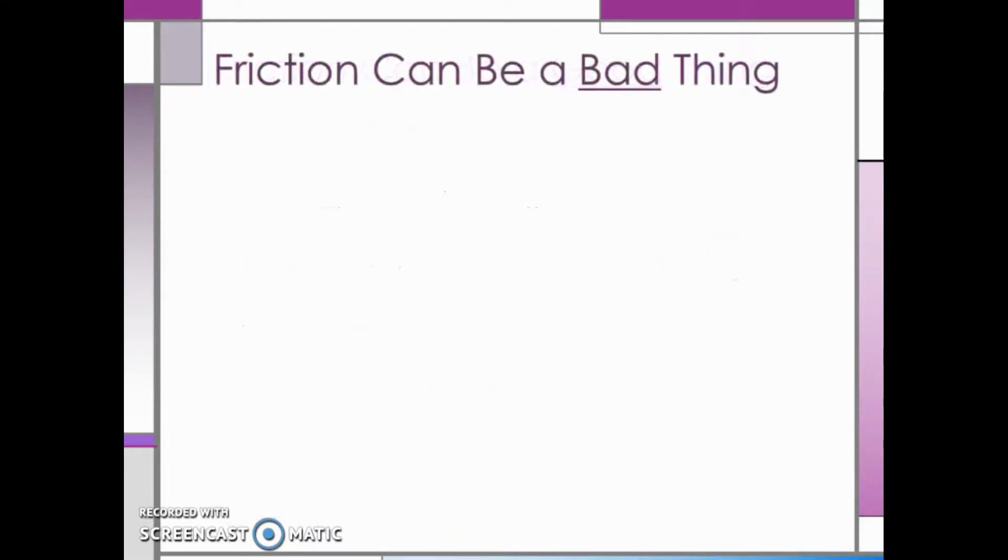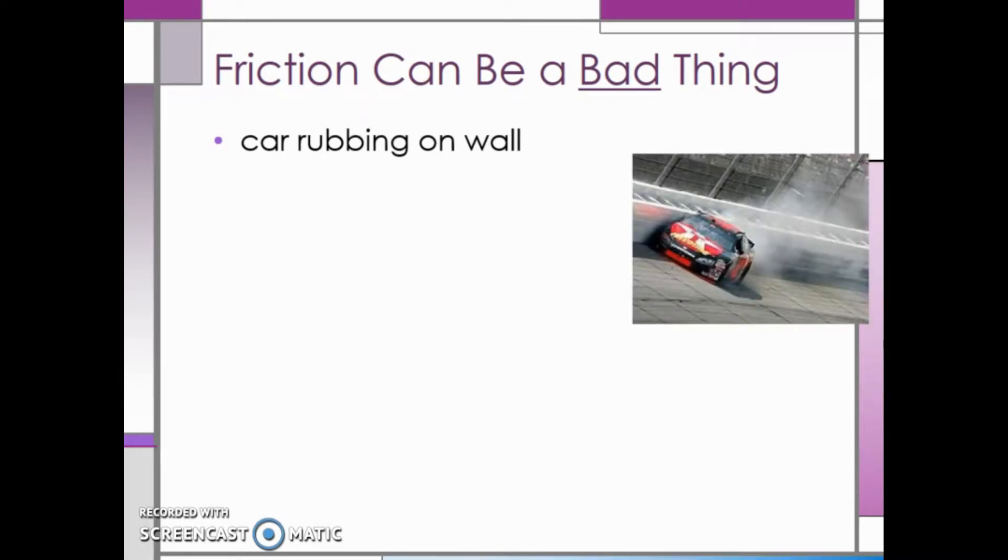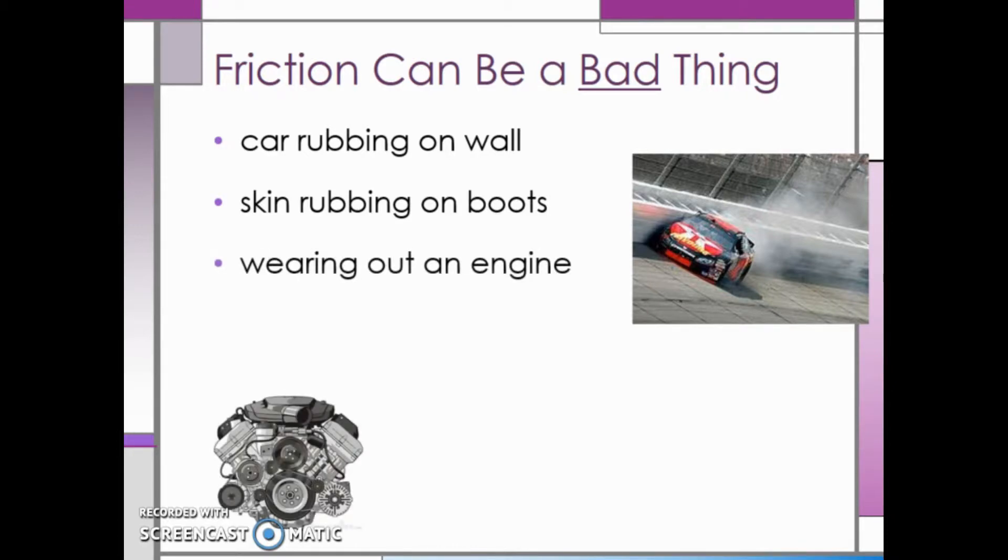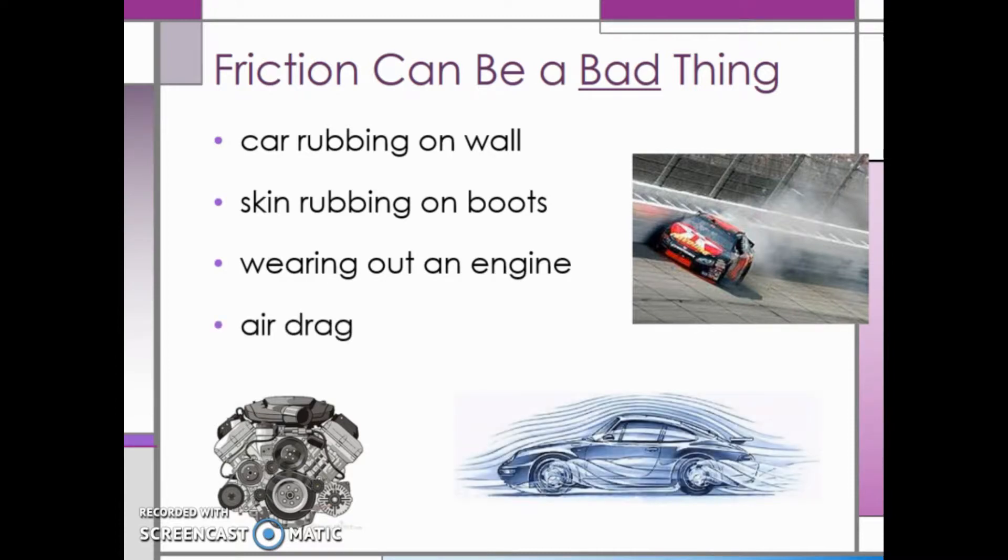However, friction can also be a bad thing. For example, in car racing, the friction between a car and a wall can wreck the side of the car and cause it to move slower. Skin rubbing on your boots is an example where friction can give you a painful blister. In an engine, friction is a bad thing because it can wear out the engine faster, which is why we need oil and other lubricants. Air drag is an example of friction that causes your fuel economy to decrease.